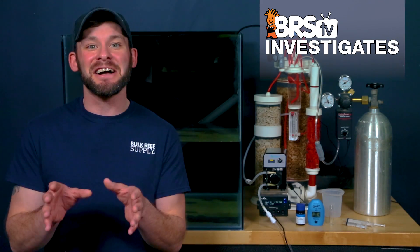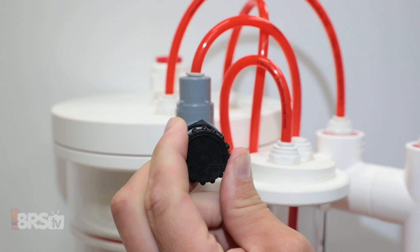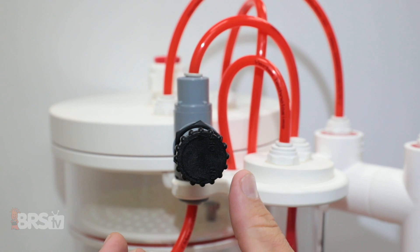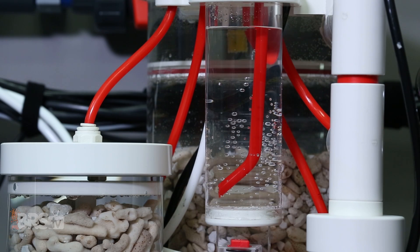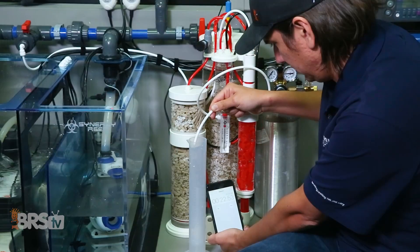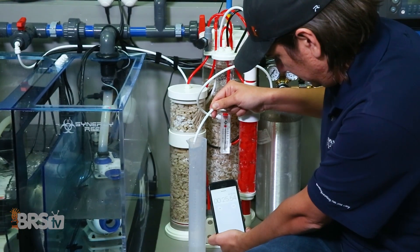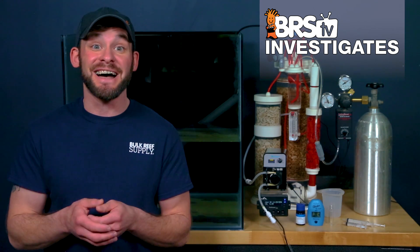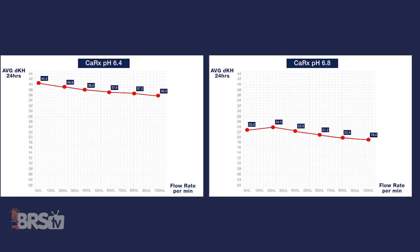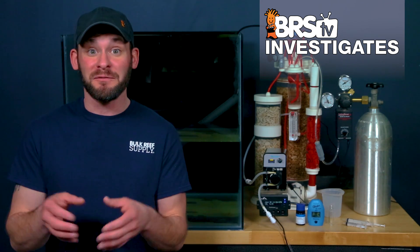Now let's talk about what we aim to discover with today's investigative testing. It's commonly believed that increasing the flow rates of the effluent from the reactor will decrease the amount of contact time inside the reactor body and in turn reduce the max concentration or saturation of the effluent it produces. While there is almost certainly some ring of truth to that thought process, this seems to be the part of running a calcium reactor that starts to make reefers' eyes gloss over.